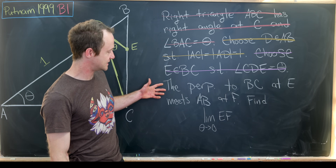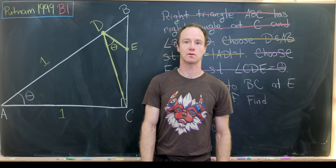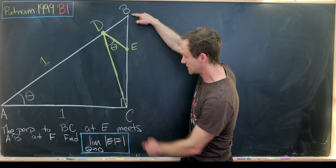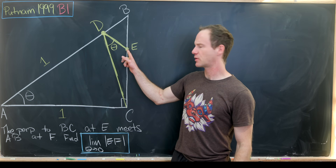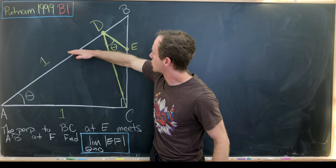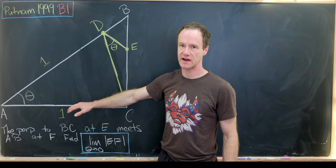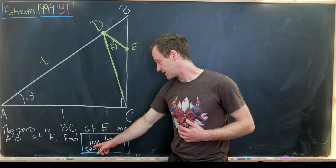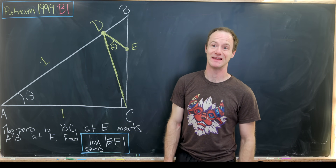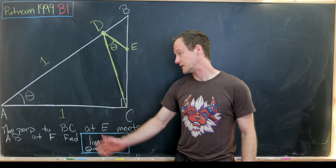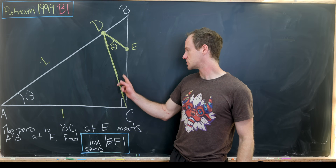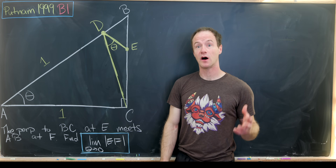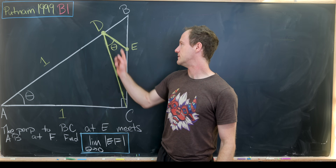Let's transpose these two sentences down here and then get to work. The perpendicular to BC at E meets AB at F — notice that creates a similar triangle to our large triangle, which we'll use at the very end. Our goal is to find the limit as theta goes to zero of the length of line segment EF. Before jumping into the rest, I'd like to fill out all the missing angles in this picture, and once we've done that, we can use the law of sines repeatedly to find all the missing side lengths.